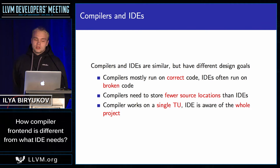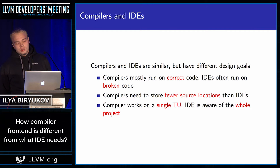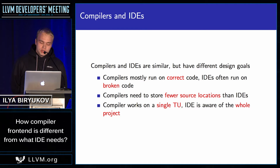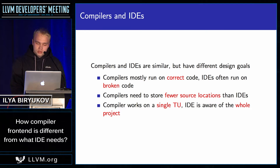When we looked at Clang back in the days when we started, we couldn't find a way to easily implement what we had in mind on top of it. So we rolled out our own implementation of the C++ frontend. Today I'm going to show you a few features which are not readily available in Clang or in other frontends out there, but that we have implemented.